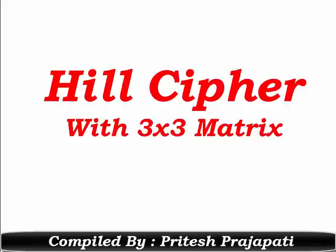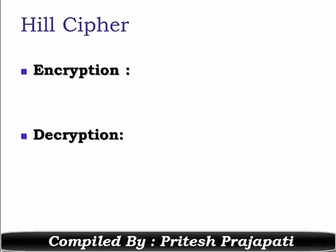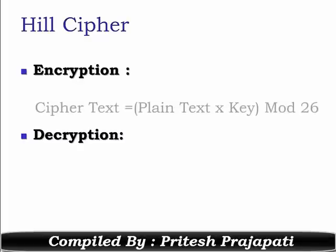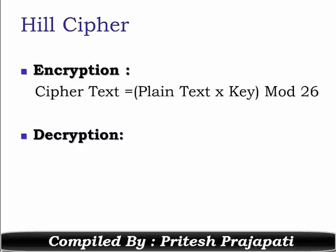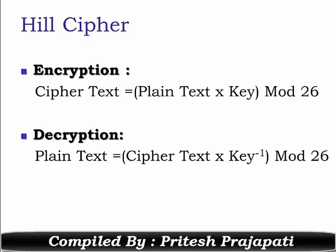In this lecture we will study Hill cipher with one example. In Hill cipher, encryption and decryption is performed using the following equations: ciphertext equals plaintext into key mod 26. Similarly, for decryption, plaintext equals ciphertext into key inverse mod 26.